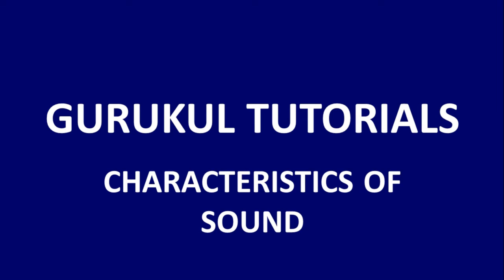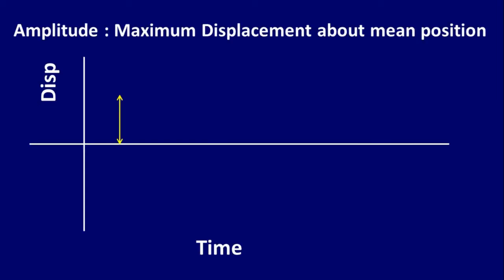Characteristics of sound. We know amplitude is the maximum displacement about the mean position. In our example we have seen A is one extreme position and M is the mean equilibrium position. This distance represents the amplitude of the sound wave.